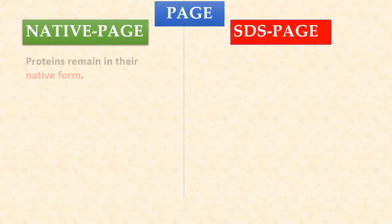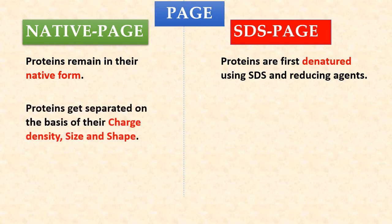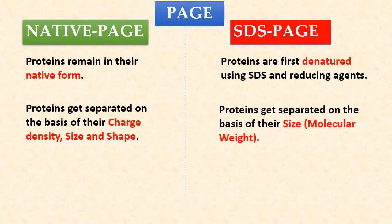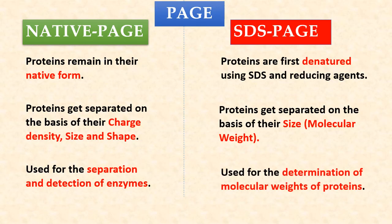In this video lecture, we understood two forms of polyacrylamide gel electrophoresis: native PAGE and SDS-PAGE. In native PAGE, proteins remain in their original intact form, but in SDS-PAGE, proteins are first denatured using SDS. The basis of separation in native PAGE is the combination of charge density, size, and shape. On the other hand, SDS-PAGE separates proteins on the basis of their molecular weights. Native PAGE is used for separation and detection of enzymes, and SDS-PAGE is used for determination of molecular weights of proteins.